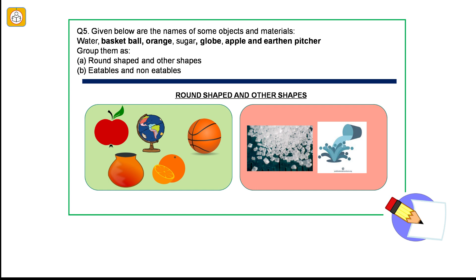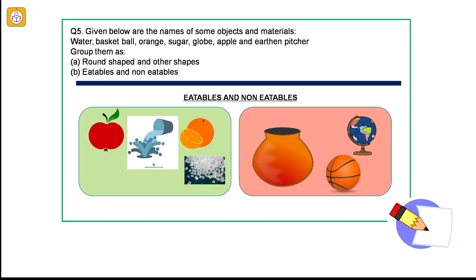Question number 5: Given below are the names of some objects and materials. Water, basketball, orange, sugar, globe, apple, and earthen pitcher. Group them as round shaped and other shapes, eatables and non-eatables. Basketball, orange, globe, apple, and earthen pitcher are round shaped. Whereas water and sugar are other than round shaped. Water, orange, sugar, apple are eatables items, also called edible items. Whereas basketball, globe, and earthen pitcher are non-eatable or non-edible items.